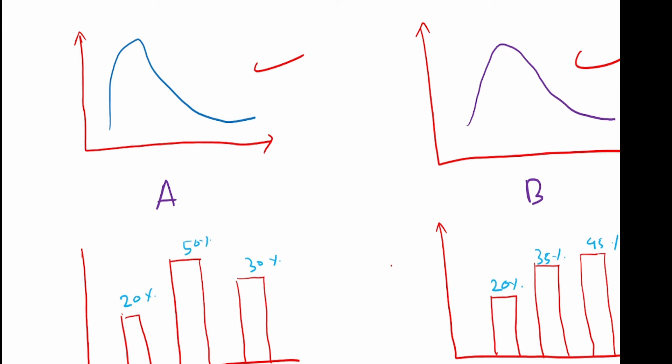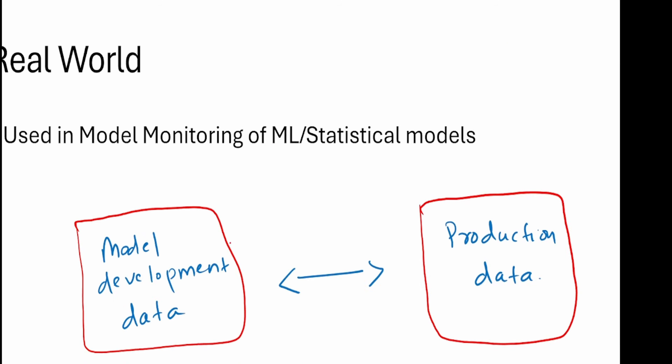The higher the KL divergence, the bigger the difference. This is important because when you build a model and the data set has changed significantly, the previous model may not be of use — it may not be doing the best job, and then you need to redevelop your model. Anytime you want to know if something has changed in the distribution of a given set of data points, you can use KL divergence for this.